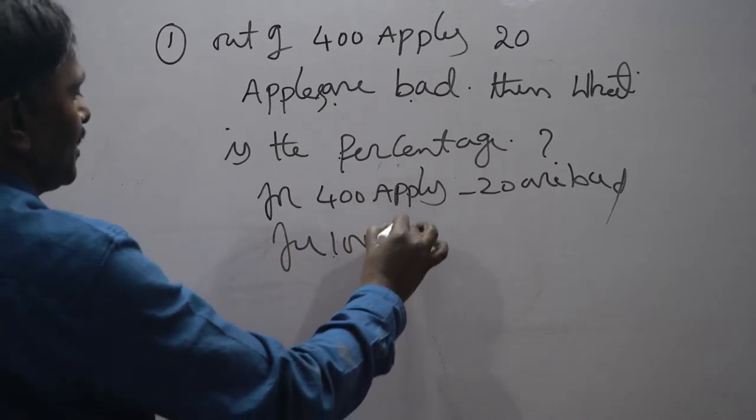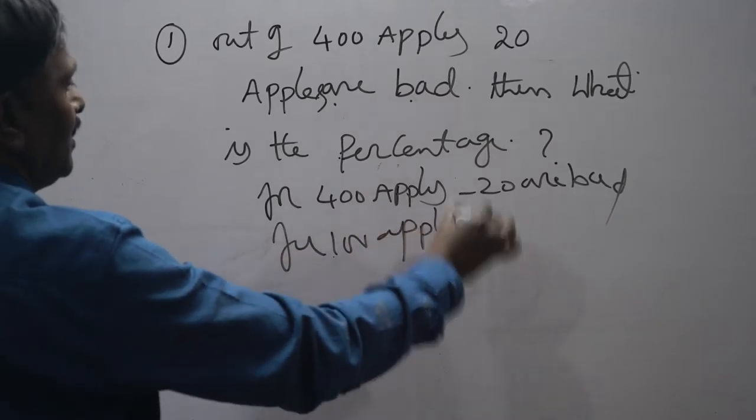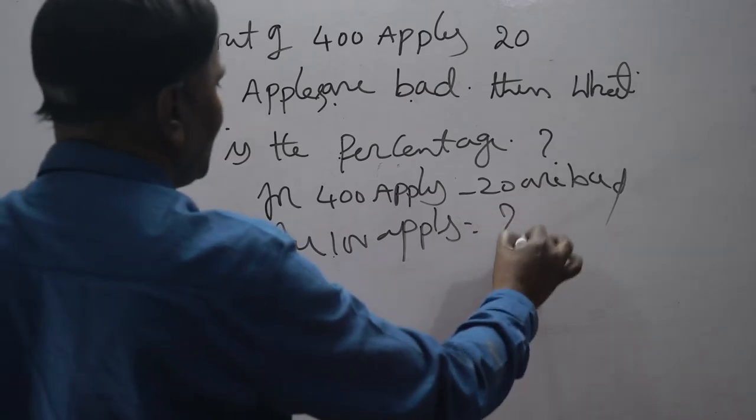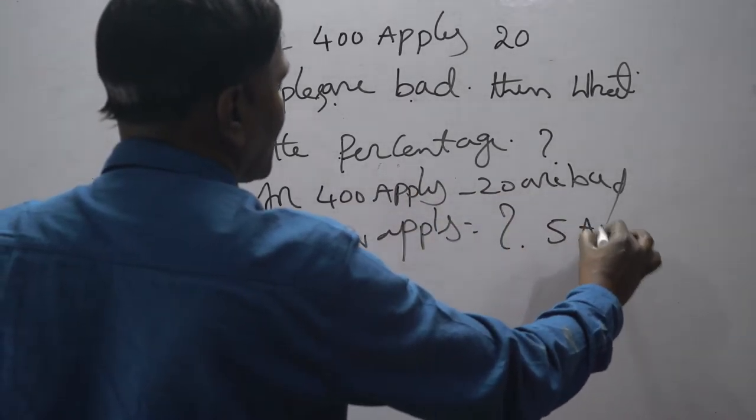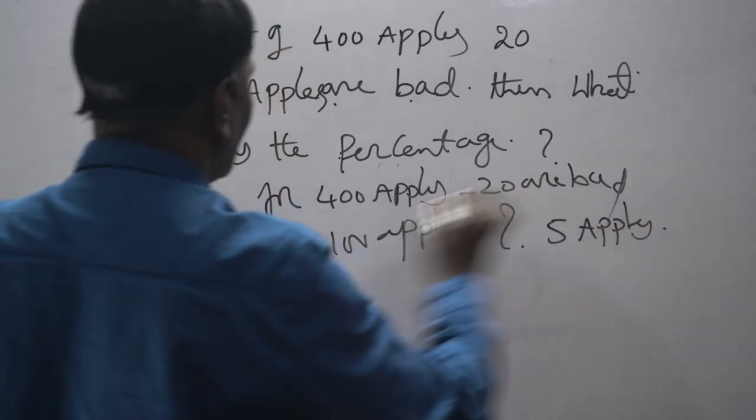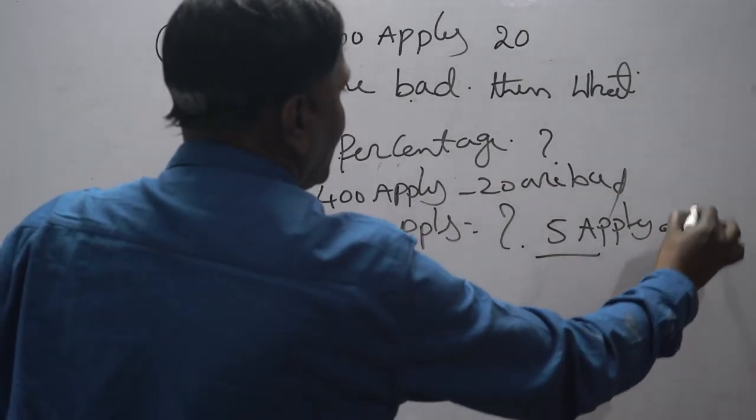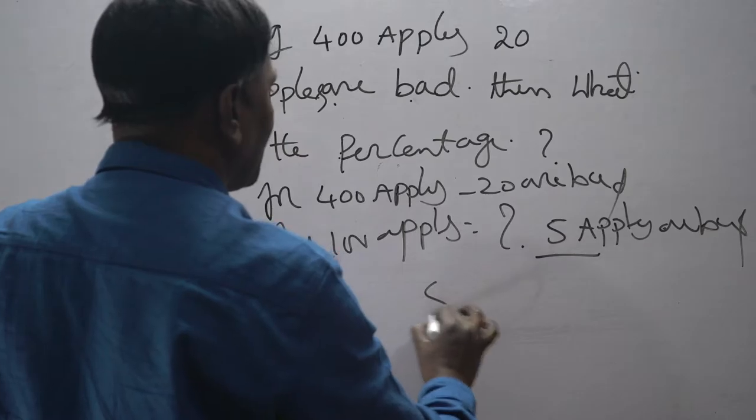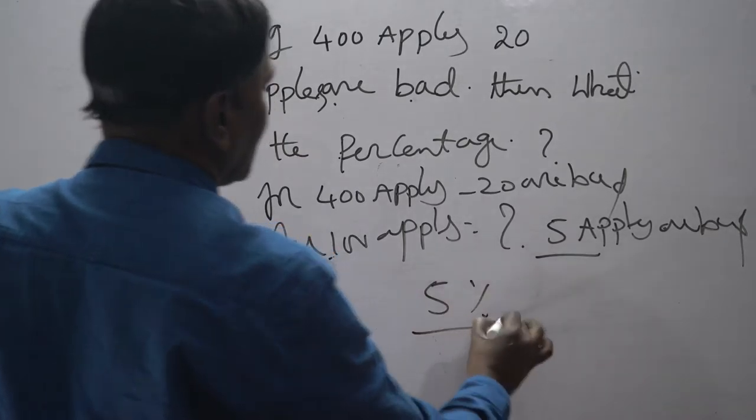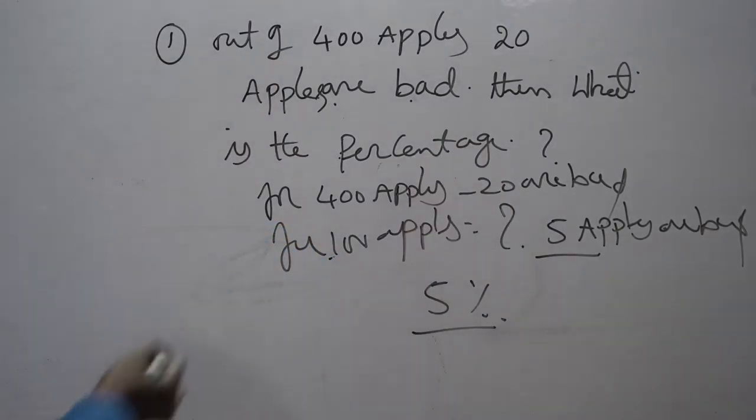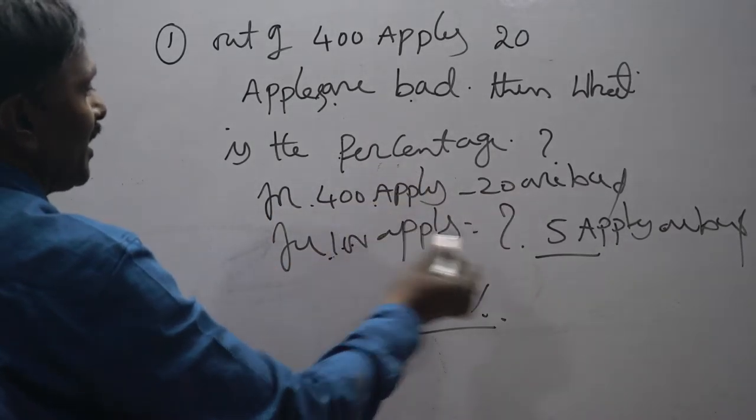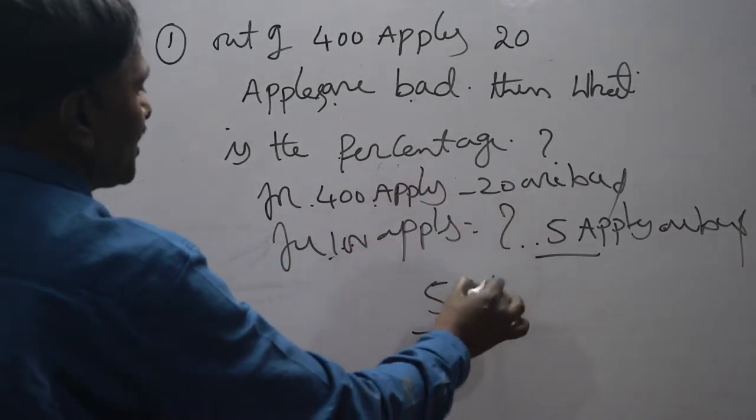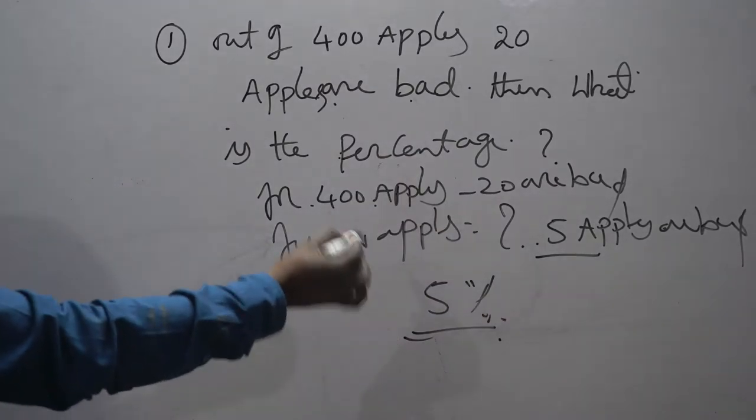So for 100 apples, this is how much? This is by 4, so 20 by 4 is 5 apples. It means for 100, 5 apples are bad. So how much percentage? This is 5 percentage. Okay, simply logical thing. Out of 400, 20 are bad, so for 100 how many? This is 5. So 5 percentage is that. So the percentage is 5 percentage, right?